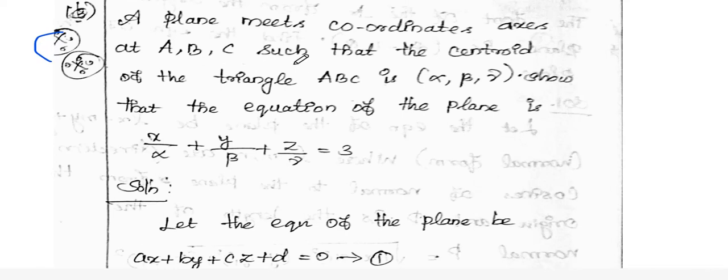The plane meets the x-axis at A, y-axis at B, and z-axis at C. Joining A, B, C forms a triangle. If the centroid of the triangle ABC is (α, β, γ), show that the equation of the plane is x/α + y/β + z/γ = 3.